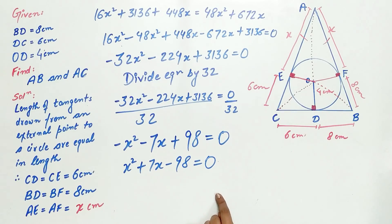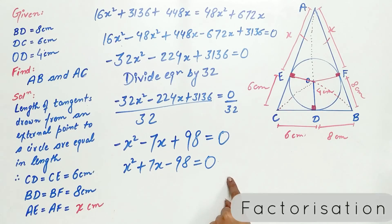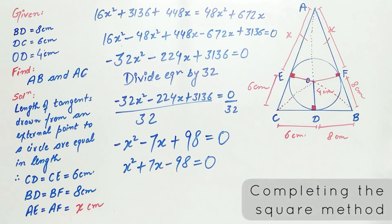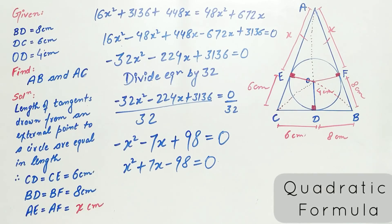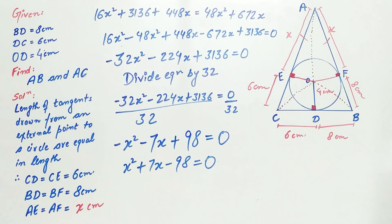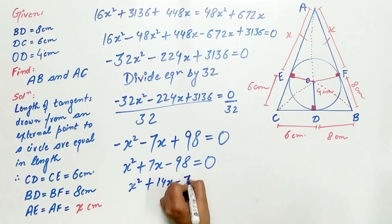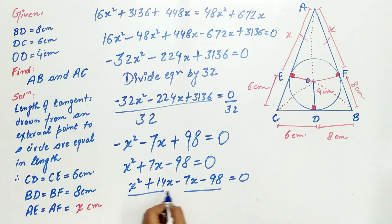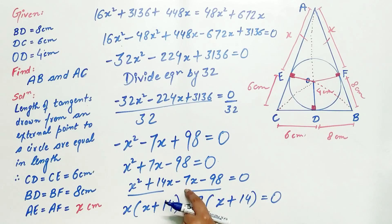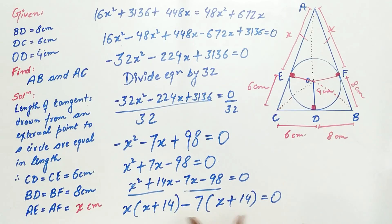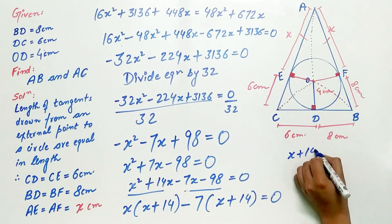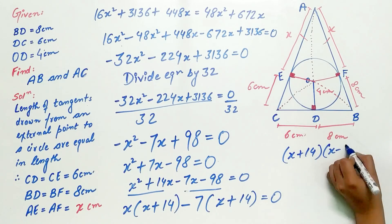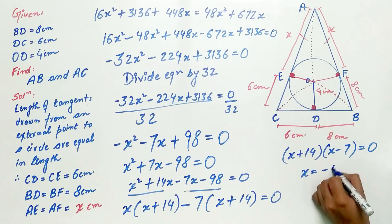We already know three methods to solve this quadratic equation: splitting the middle term, completing the square, or the quadratic formula. Using the splitting the middle term method: x is common in both terms of −x²−7x, so factor out x to get x(x+14) − 7(x+14) = 0. Then (x+14)(x−7) = 0, giving x = −14 or x = 7.